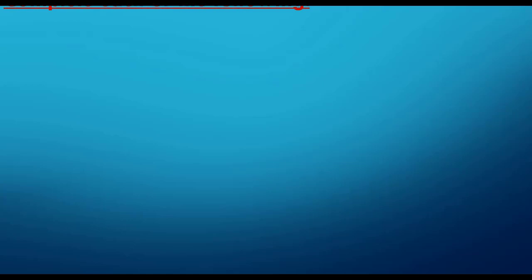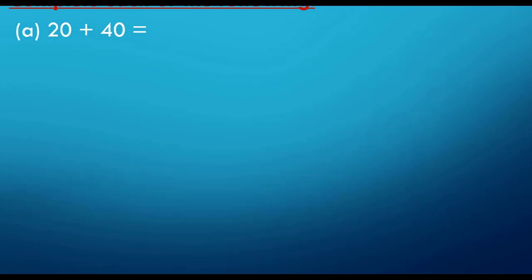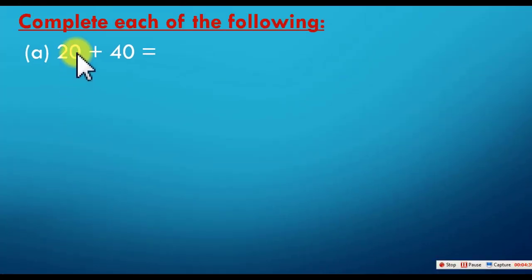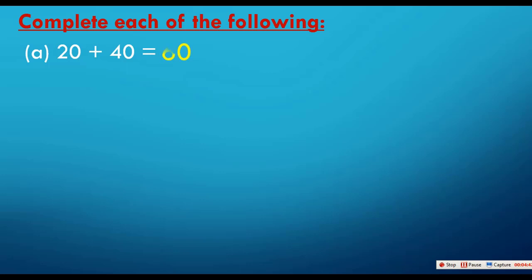Complete each of the following. 20 plus 40. This is very simple: I have 0 in the units place and 0 in the units place, so 0 plus 0 equals 0 in the units place. Then 2 and 4 give me 6 in the tens place. So the answer is 60.